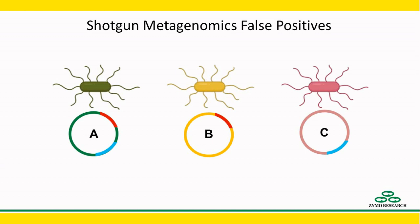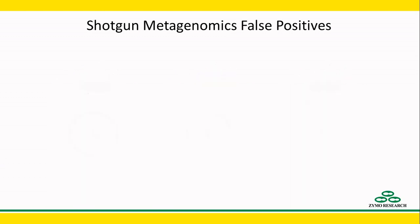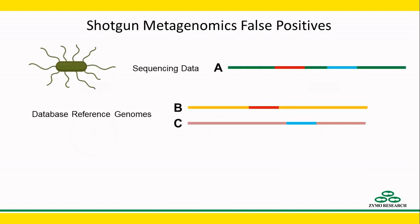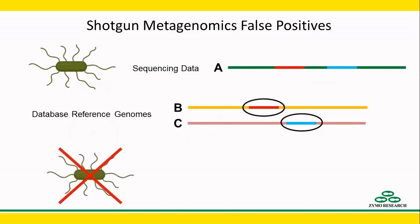Now let's say a sample that we sequence contains species A but not B and C, but the reference database we are using contains genomes from B and C but not A. Unfortunately, the bioinformatics will incorrectly predict that both B and C are present.